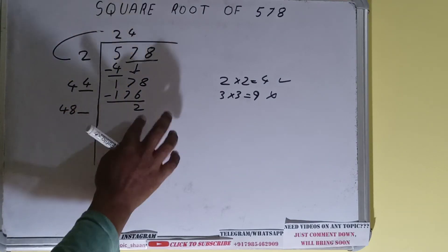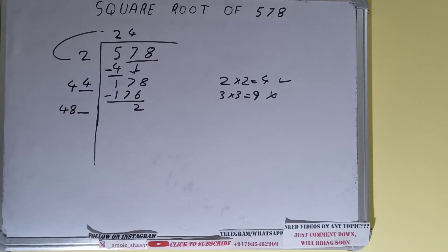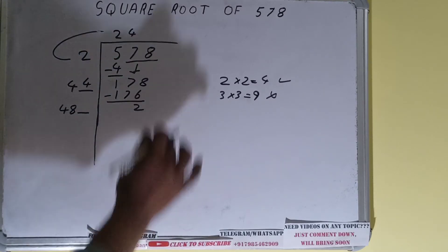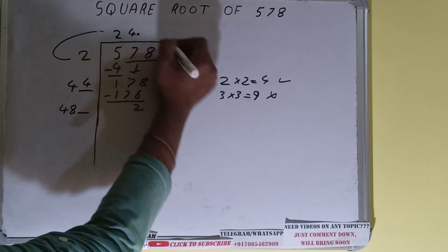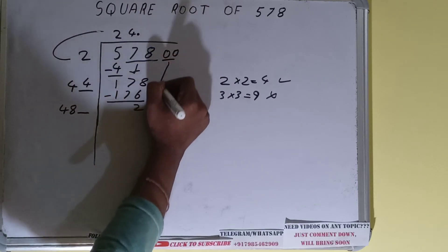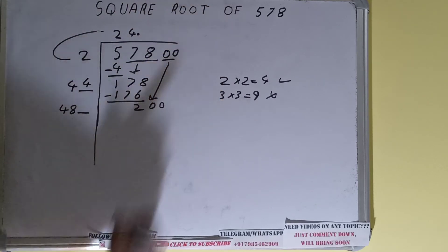And this number we need to make it big, but we don't have any more pair. So we'll put decimal. Once we put decimal we can bring down pair of zeros and number will become as 200.